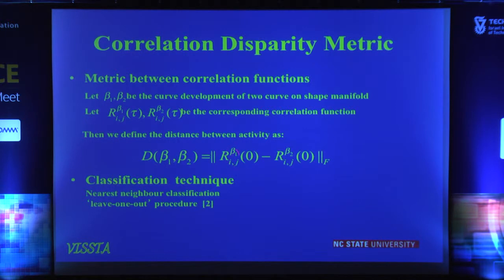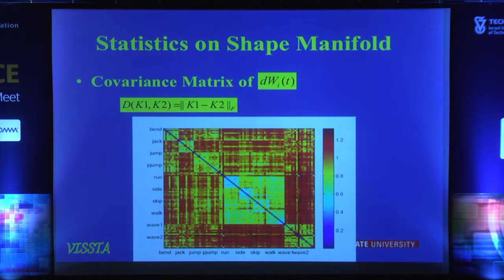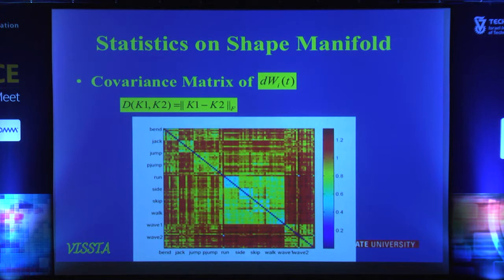We look at the correlation functions. If I have two developments — an observed activity and a template activity, a model — I compare them through these correlation functions. I can take an L2 distance on that, and I get this confusion matrix. You notice these are all the activities — waving to bending and so on — but there are quite a few activities that are confusing. We weren't able to reproduce the performance from the 2005 paper by the Weisman group.